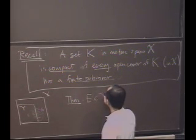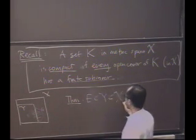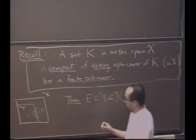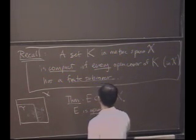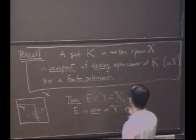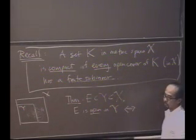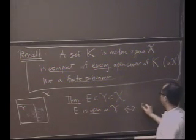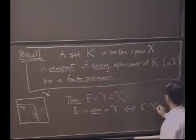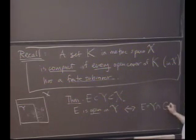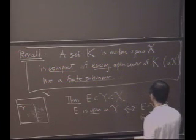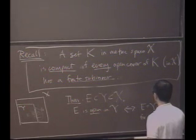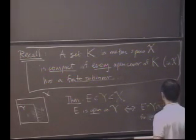if you have E, which is a subset of Y, which is a subset of X, then E is open in Y, if and only if, what? E is actually the smaller metric space intersected with some set G, for some open G,